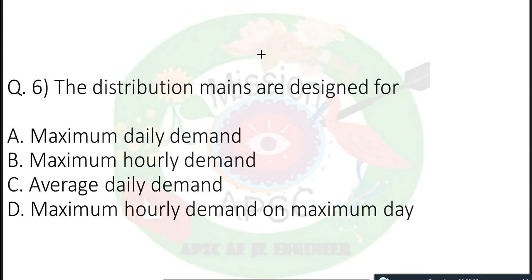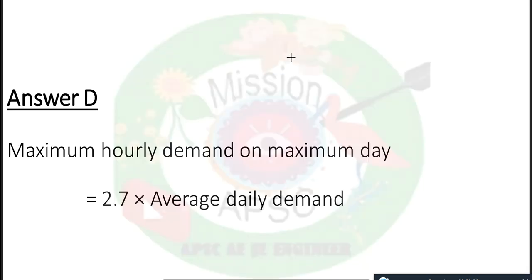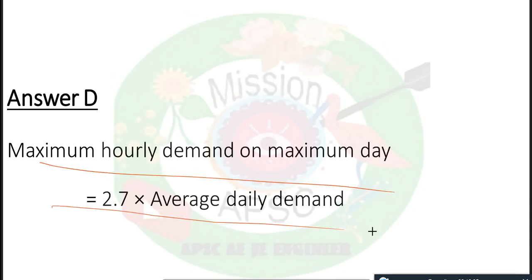Next question: The distribution mains are designed for — maximum daily demand, maximum hourly demand, or average daily demand? Option D: maximum hourly demand on maximum day, which is 2.7 times of average daily demand. The answer is maximum hourly demand of maximum day.